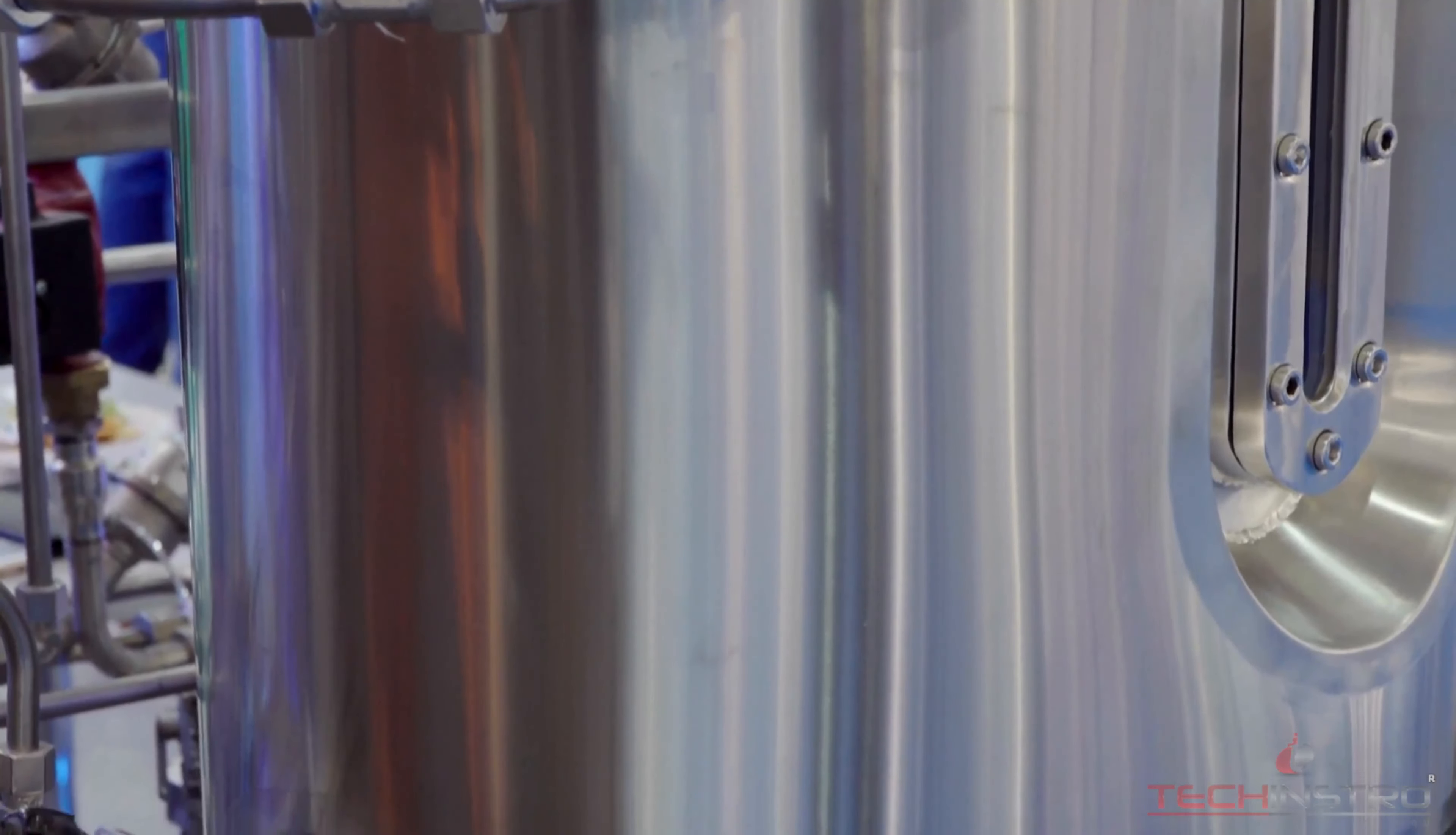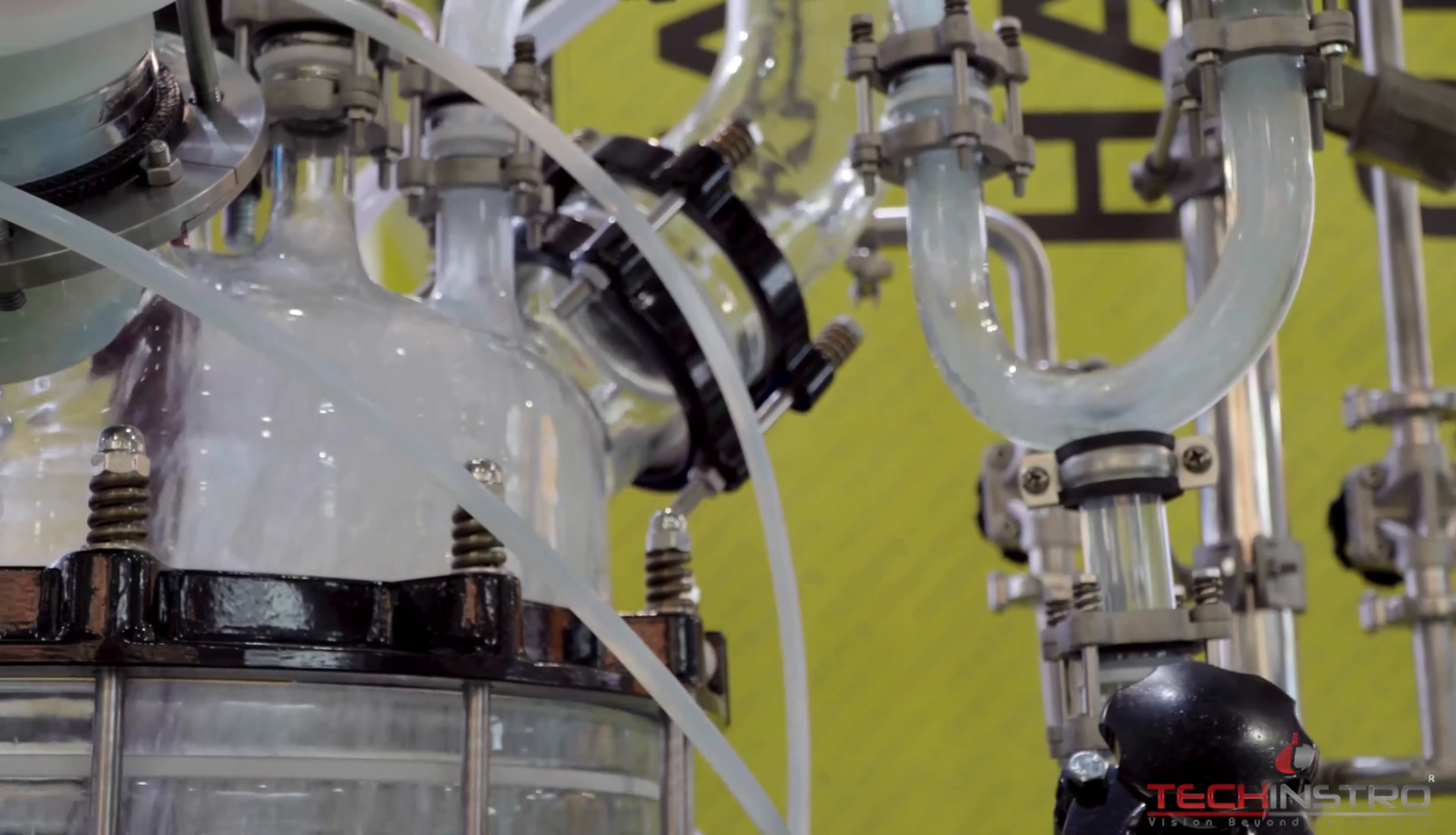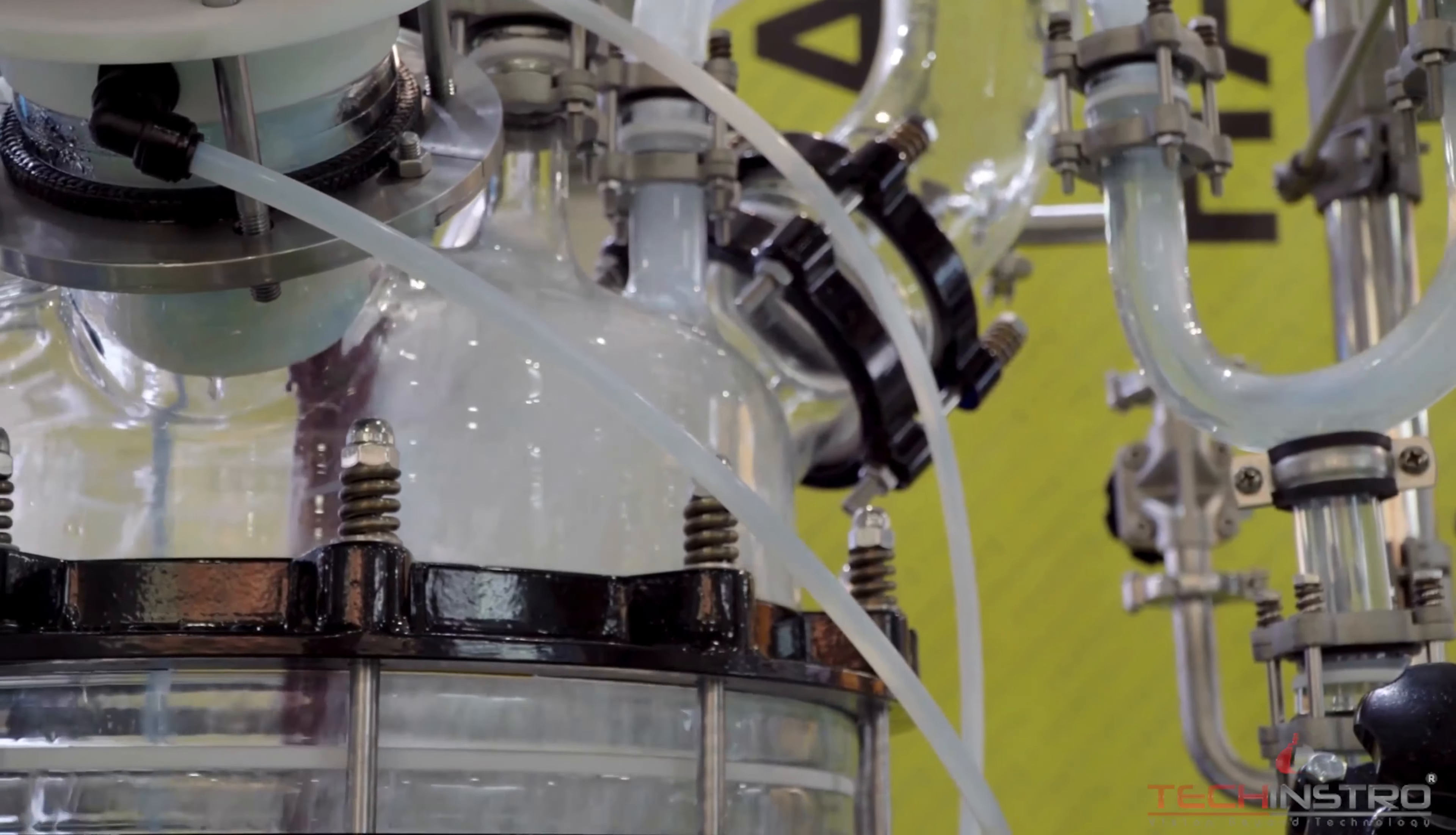The substances or reactants involved in the chemical reaction are loaded into the reactor vessel. This can include solids, liquids, or gases depending on the specific reaction. The autoclave reactor is sealed securely to create a closed system. This is crucial for maintaining the desired pressure and preventing the escape of reactants or products.